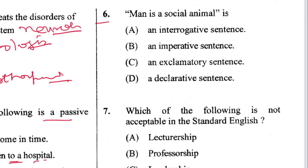Question 6: 'Man is a social animal' — to which type of sentence does this belong? It is not interrogative, not imperative, not exclamatory. It is a declarative sentence. D is the answer.